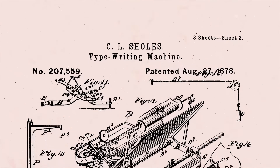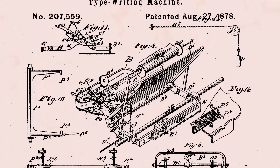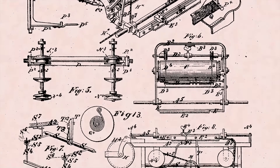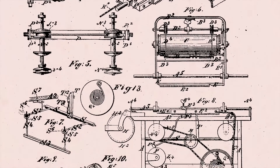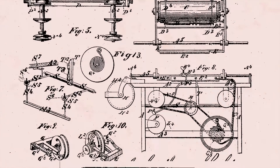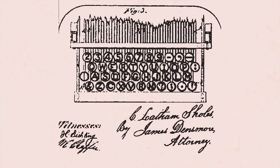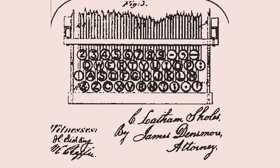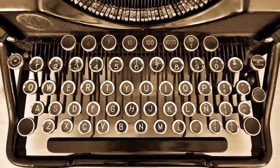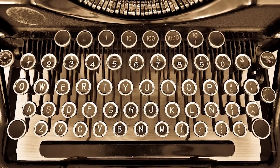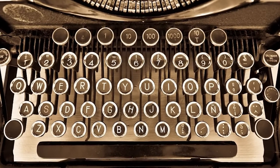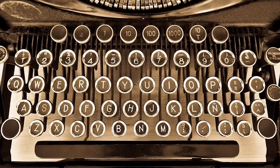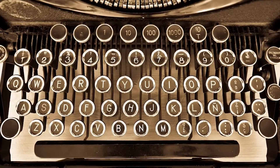In 1878, Scholes finally landed on the QWERTY design by switching around some letters from his original layout, noted by his patent filing. Currently, this theory with the influence from Morse code seems to be the closest to the truth of how the QWERTY design came to be, but historians still aren't exactly sure.